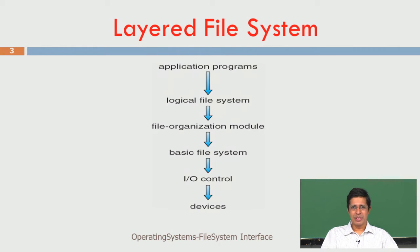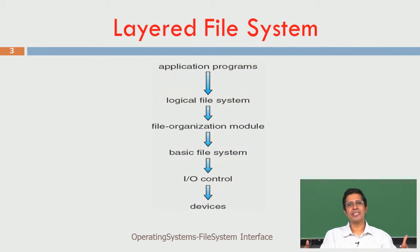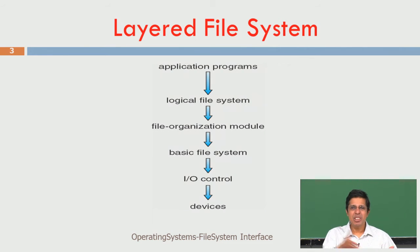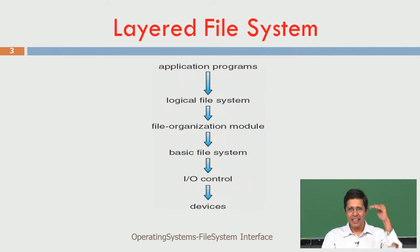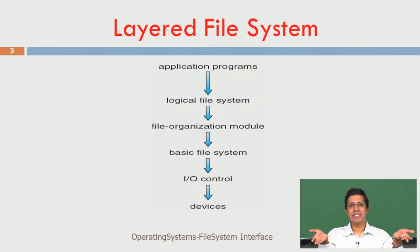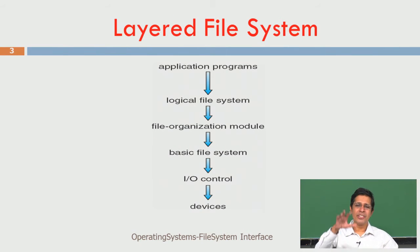The logical file system sees a file organization module. File organization is like a tree: you have a root directory, inside that several directories, inside those more directories - a hierarchy of directories, where each directory can have subdirectories and files. The file organization module sees a basic file system, which sees an I/O control that reads and writes, and the I/O control sees the devices. So there is complete abstraction from application program seeing a file as a name, down to the I/O control seeing the devices.